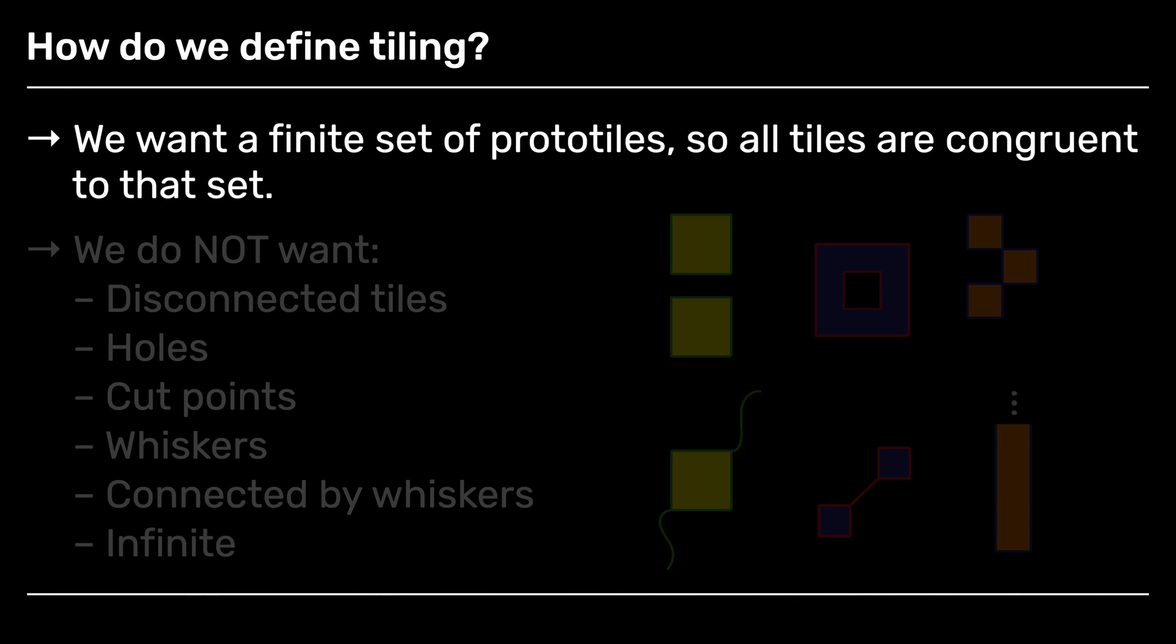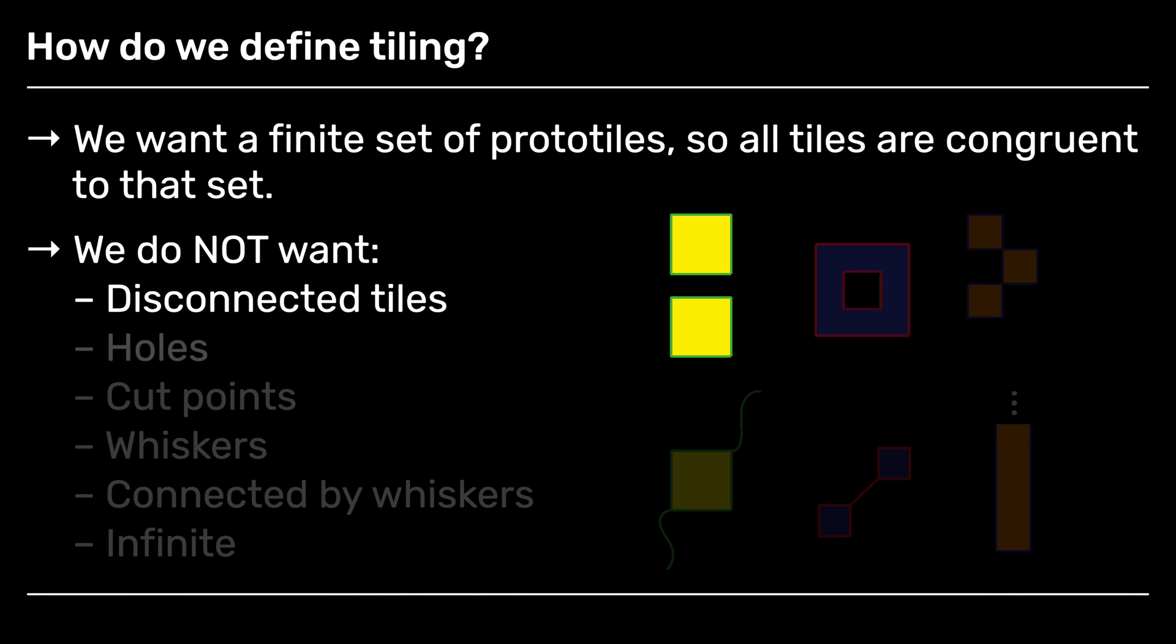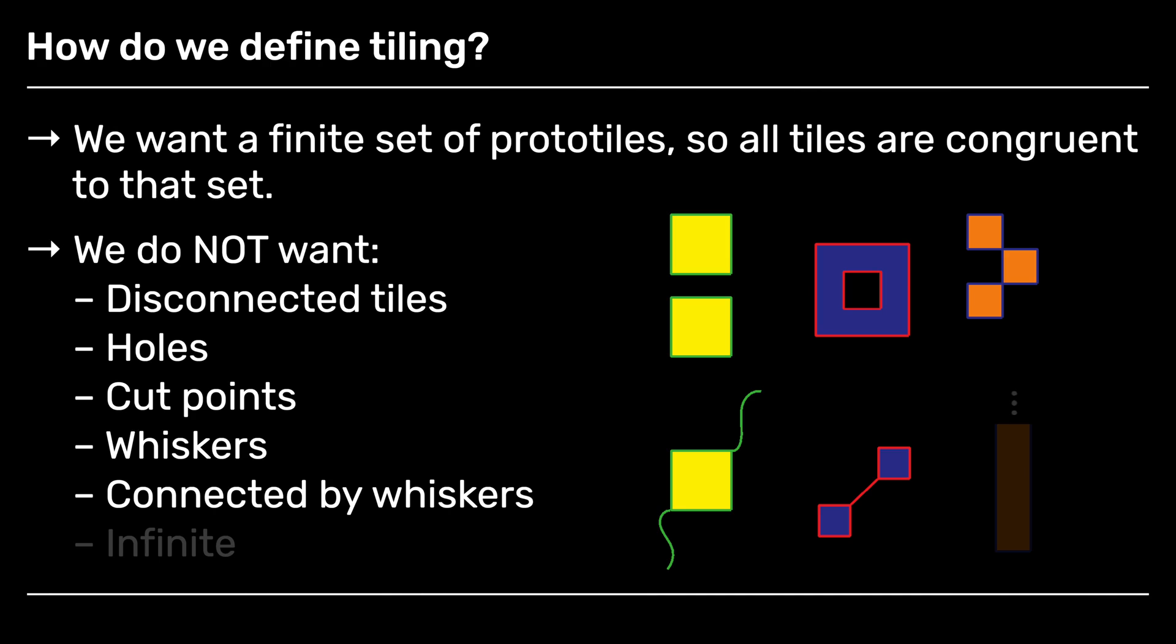So now let's go to the question of how do we actually define a tiling. What do I mean by a tiling? We want a finite set of proto tiles so that all tiles are congruent to that set. And I don't want any of the following: I don't want any of my tiles to be disconnected, I don't want any of my tiles to have holes in them, I don't want any of my tiles to have cut points where I could remove a point and that would disconnect my tile. I don't want my tiles to have whiskers, I don't want my tiles to be connected by whiskers, and I don't want my tiles to be infinite.